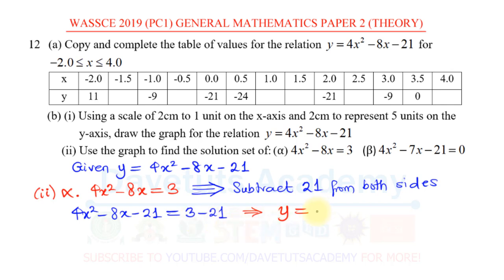So y = -18. This is going to be a straight-line graph because it is a constant — it does not depend on x. I can easily get that on the graph, and the point of intersection of that horizontal line with the quadratic curve is what will be the root — the solution to this particular equation. So let's do the other one.